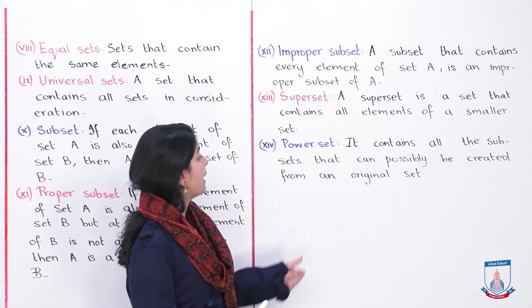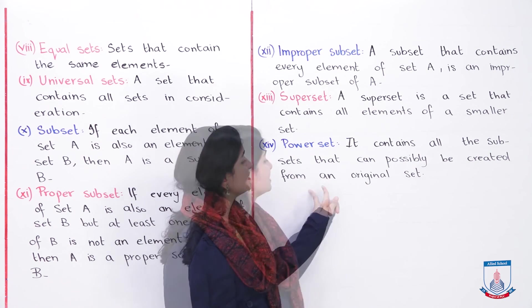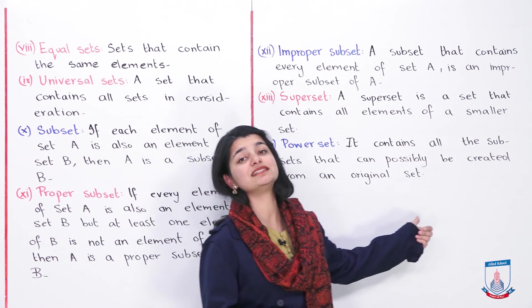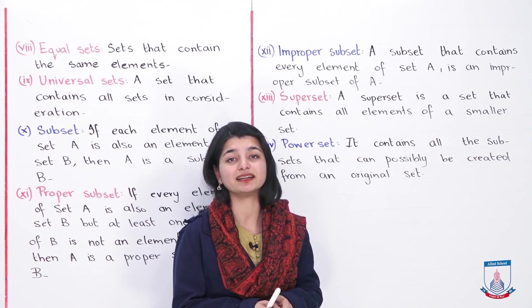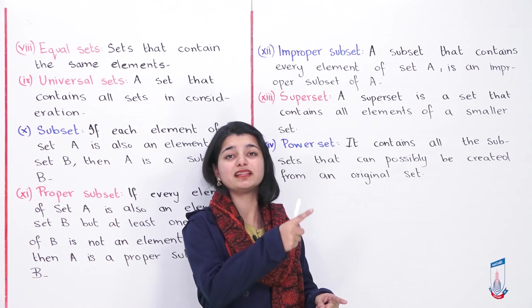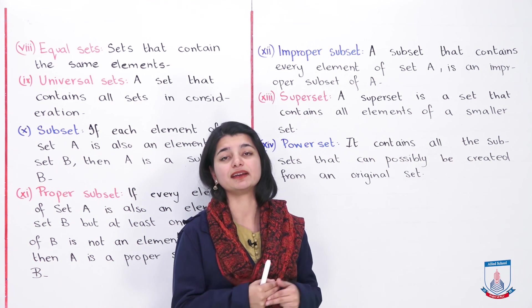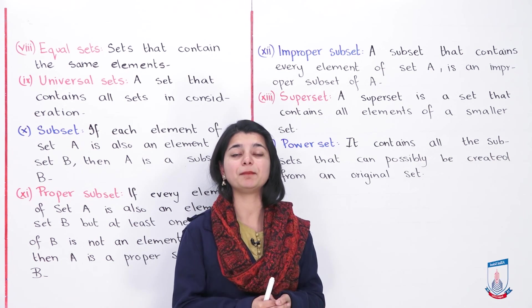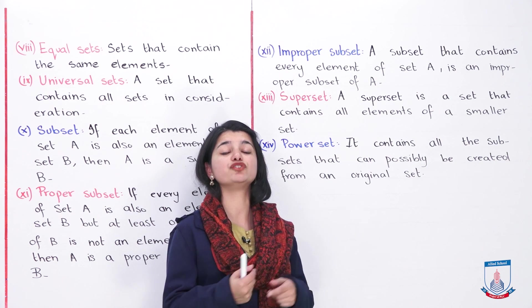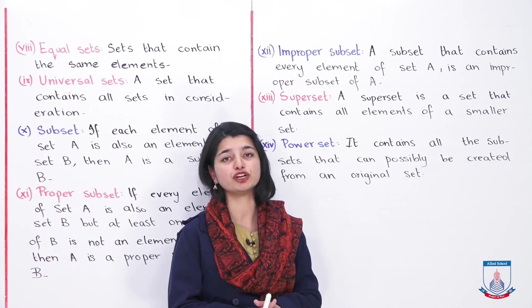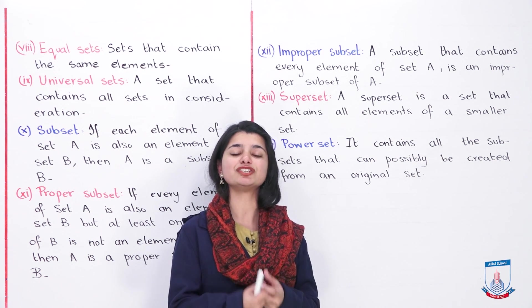Our last definition is power set. Power set is a very interesting concept — it contains all the subsets that can possibly be created from an original set. Whatever subsets can be made from one set, you collect all of them and that is the power set. We have discussed power set examples in detail in a previous lecture. If there is any confusion, you can always go back to that lecture and revisit it, because it is a confusing topic and it is better to clear your concepts well.